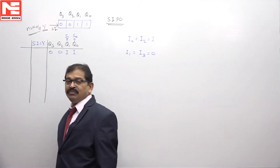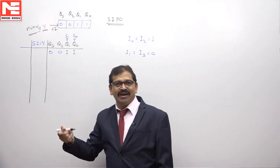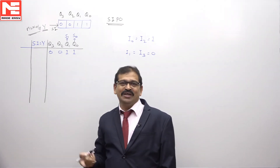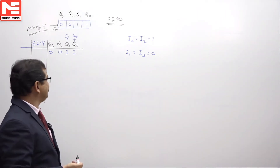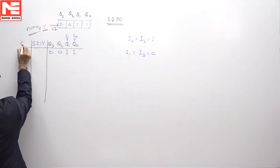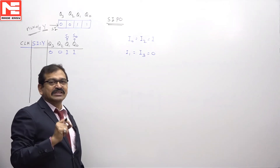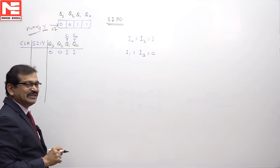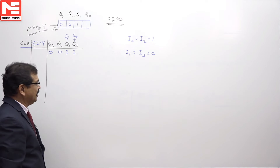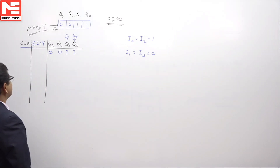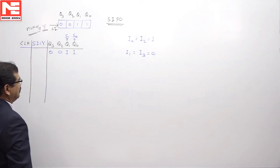The question is: with the initial content of the register being 0011, after how many clock pulses does the register return to the initial state? To find this, we apply clock pulses one by one, because each clock pulse inserts one serial input bit into the register. We check after how many clock pulses the register returns to the same initial content.